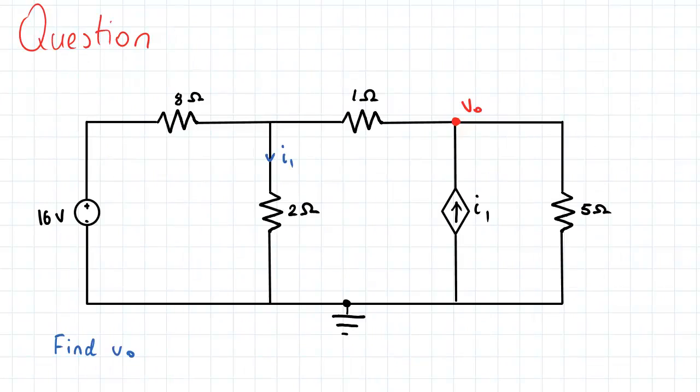So in our question, we have the circuit arrangement as seen over here, with a reference node denoted in the circuit diagram. The question is simply asking us to find V0, the voltage at this node, using nodal analysis.